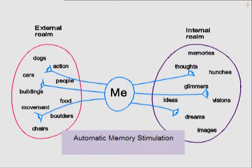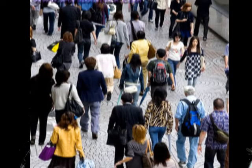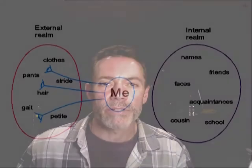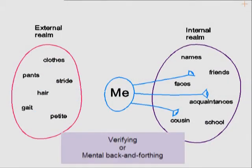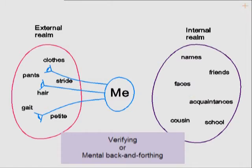Let's return to our city street example. Imagine you continue walking and continue to be intrigued by this person ahead of you. Eventually, as you speed up and get closer, you'll be able to determine if this actually is the person you're thinking of or isn't. That is, you perform a type of comparison between the imagery coming from out there against the images you're retrieving or experiencing internally. This is the second common first-person mental phenomenon I want to address — we could call this process verifying, or mental back-and-forthing. These are the two mental processes that any theory of consciousness needs to be able to account for.